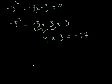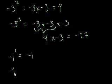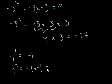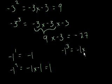I hope I didn't confuse you — maybe this will drive the point home. Negative 1 to the first power just equals negative 1. Negative 1 to the second power equals negative 1 times negative 1, and we know that equals 1. Negative 1 to the third power — that's negative 1 times negative 1 times negative 1. Negative 1 times negative 1 is 1, times negative 1 — well, that's negative 1 again.